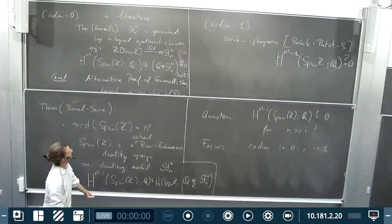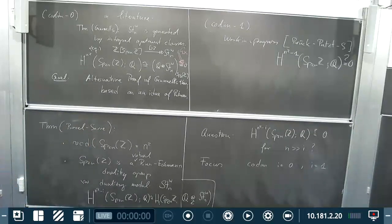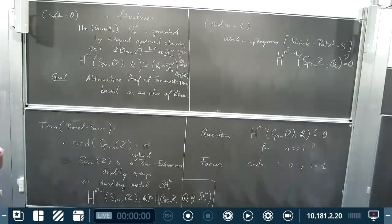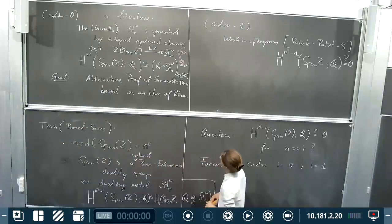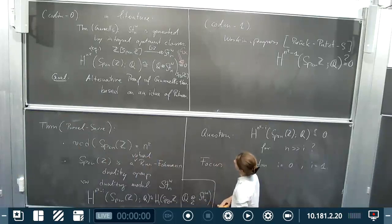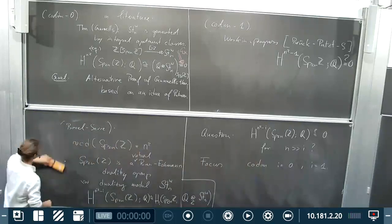In order to prove Gunnels' theorem, I would like to take the perspective of this modular symbol map. I have just defined what the domain of this map is, so now I want to define what the target is — namely, I want to give you a description of the symplectic Steinberg module.